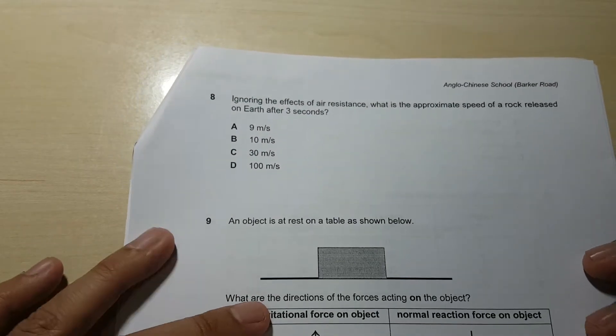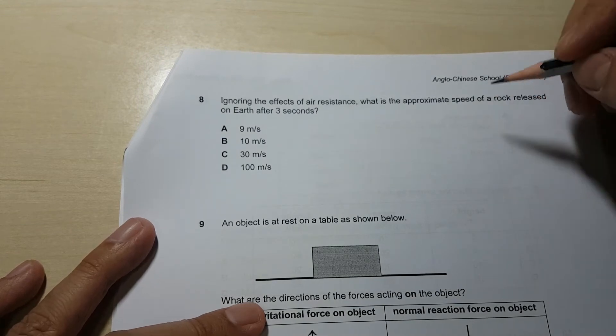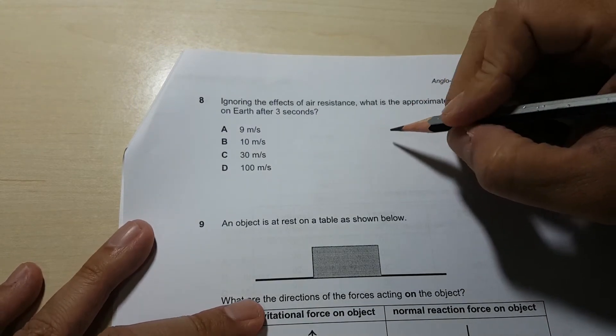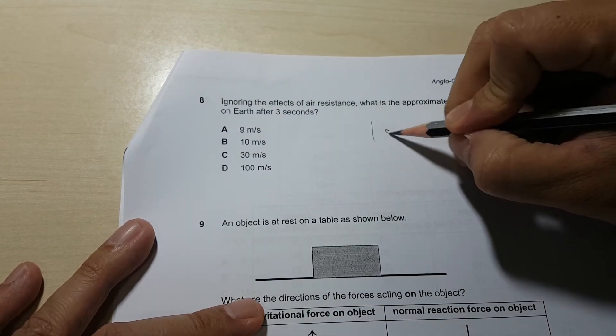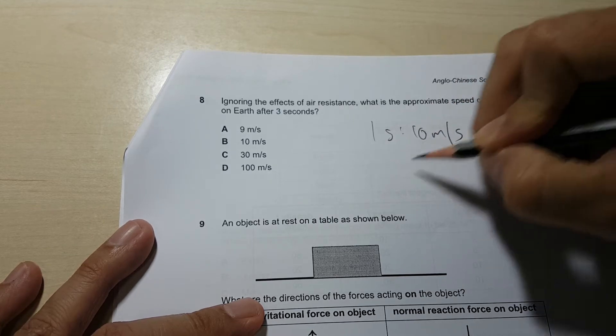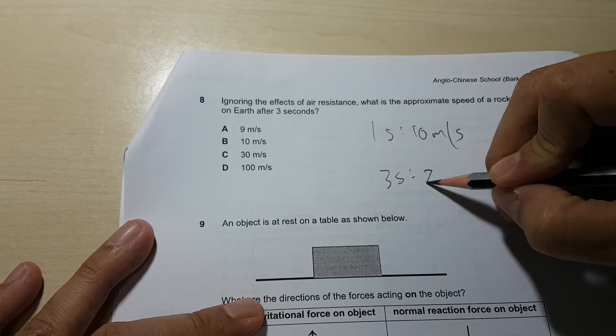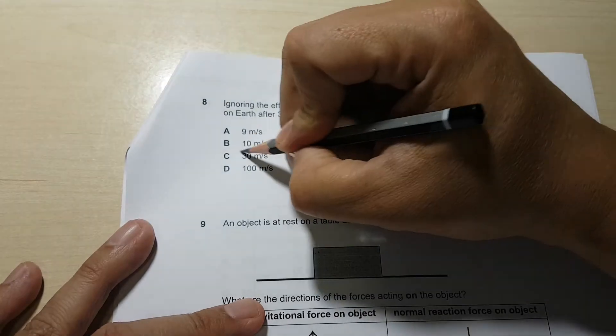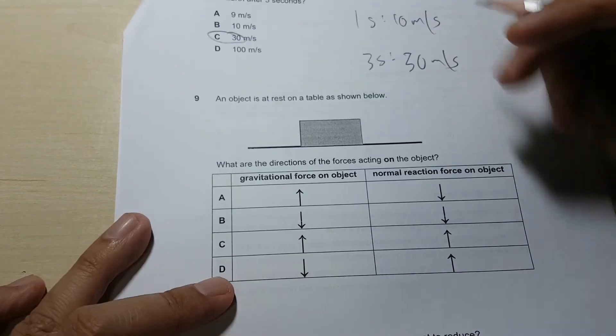Let's look at number 8. Approximate speed of rock after 3 seconds. So this one, 1 second, that will be 10 meters per second. So 3 seconds will be 30 meters per second. So that's for C.